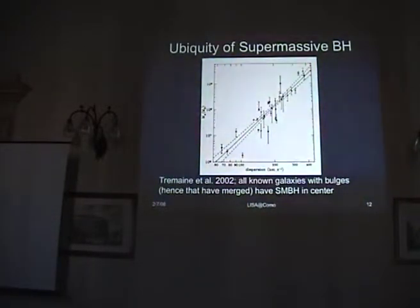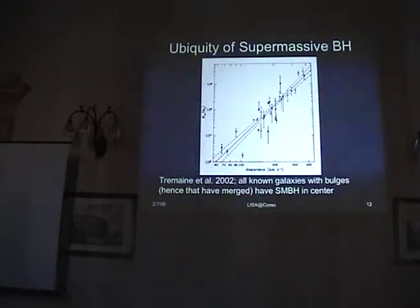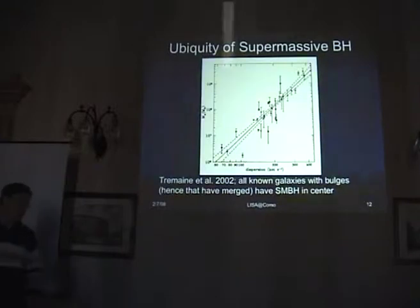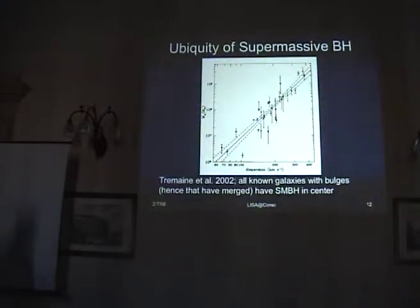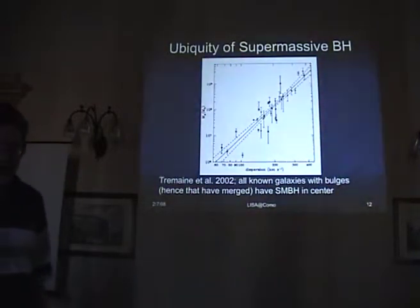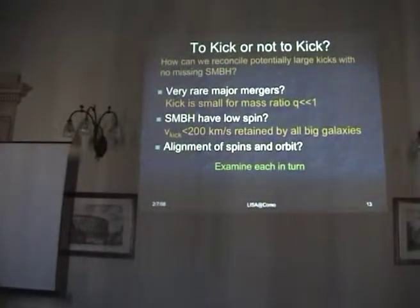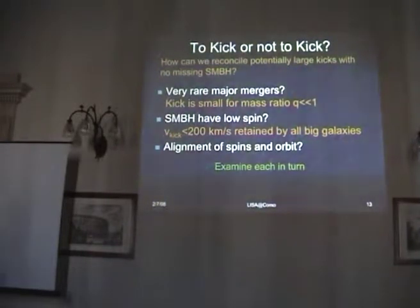When you look for supermassive black holes dynamically, they are everywhere in all big galaxies that have bulges. There are cases such as M33, which does not have a central bulge, does not have a supermassive black hole fitting the M-sigma relation — but we think that's because it hasn't ever undergone a major merger. There are at least 20 different papers proposing explanations for the M-sigma relation, and it sure seems to be an empirical fact. You do not have a lot of galaxies without supermassive black holes. Therefore, we have to reconcile the possibility of very large kicks with the observation that in the cases of major mergers you don't see missing supermassive black holes. Why can this be reconciled?